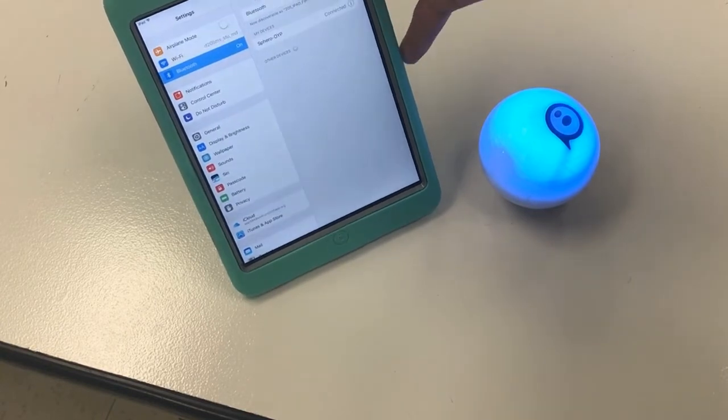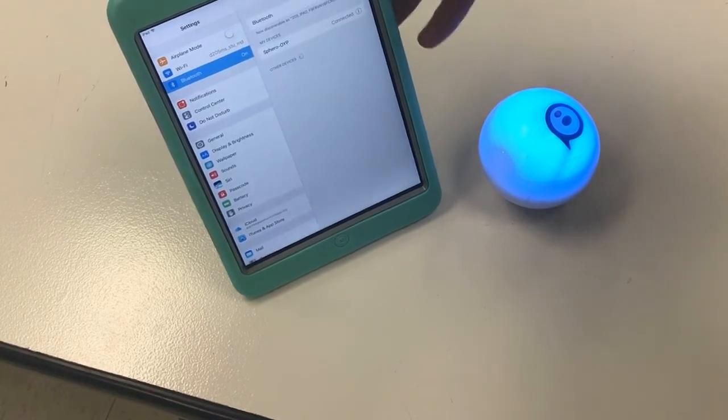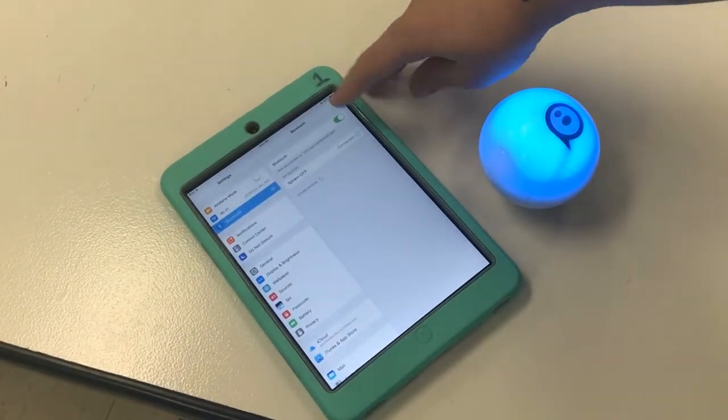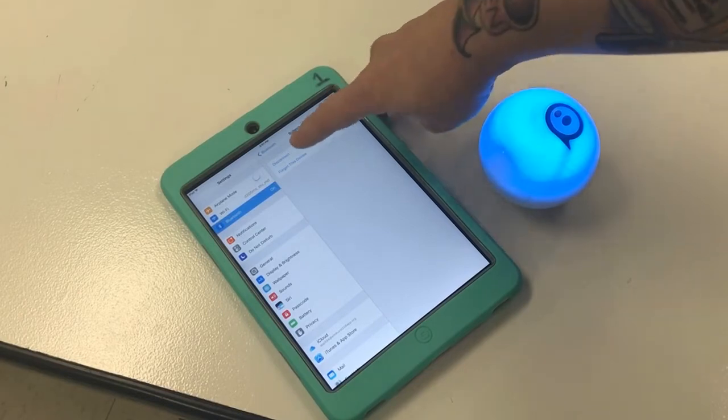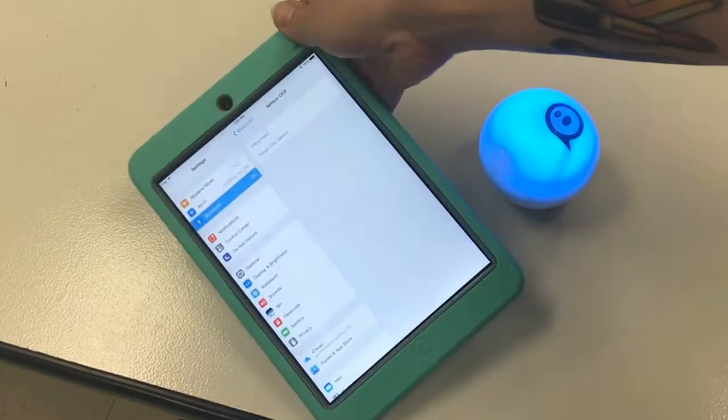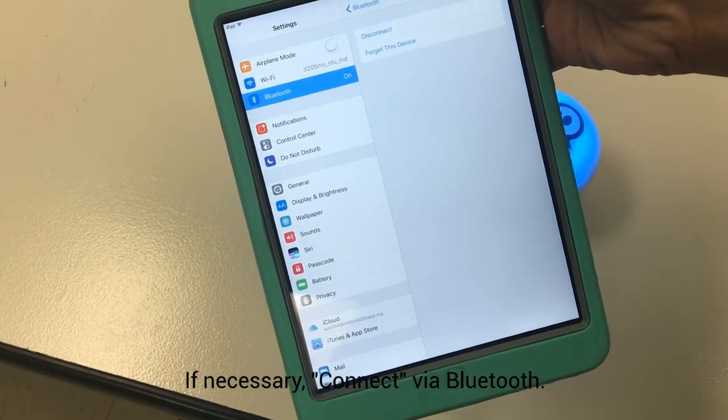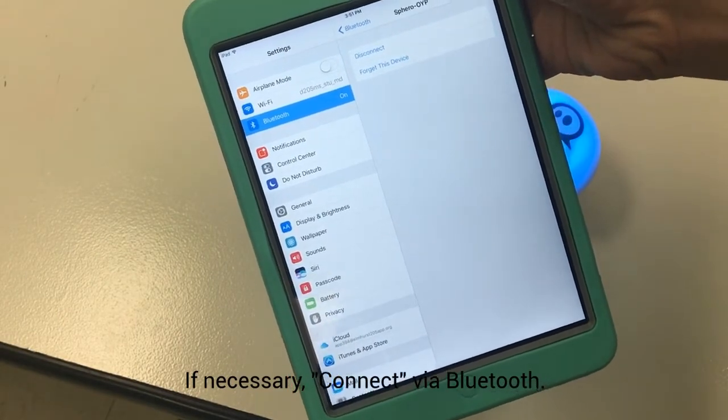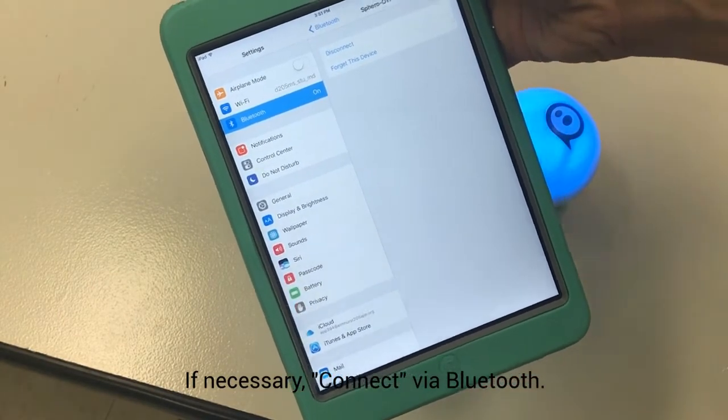Sometimes that's actually all it takes—you open up the settings, you let it connect, and then reopen the app. Sometimes you do need to hit the little information button, and where I see a disconnect right now, sometimes there's actually a button that says connect. So if it's not connected, you can hit that connect button and that sometimes is enough to refresh it and wake it up.